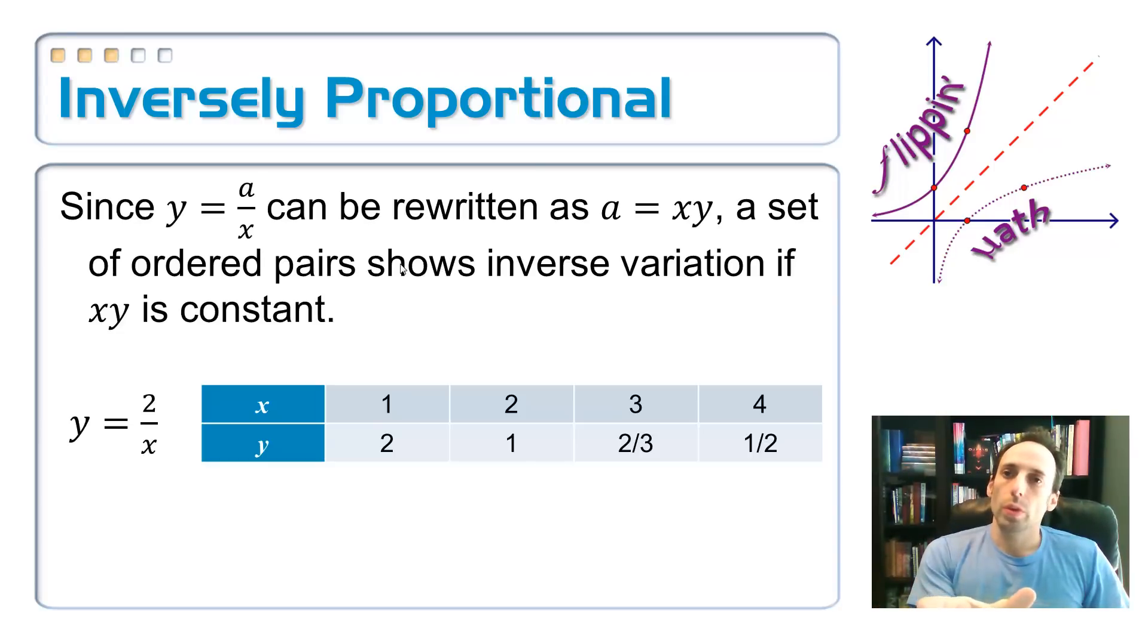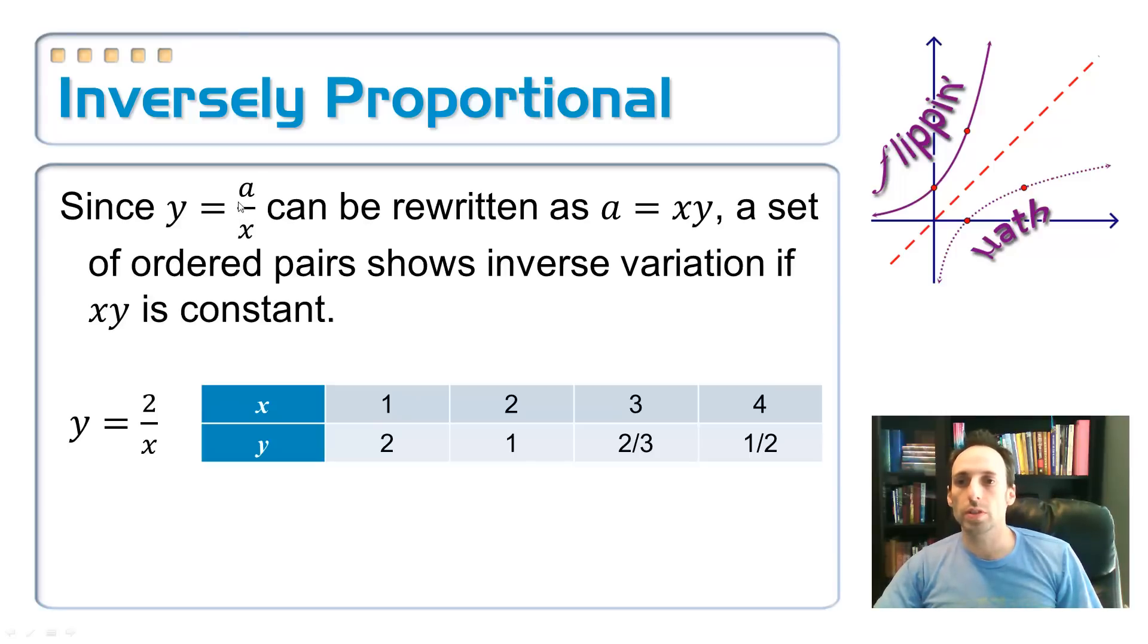Now, if we looked at this before with direct variation. In direct variation, if I divided the y by the x, I got the constant variation. So, if I take this equation, y is equal to a times x, then I can get the constant variation by just getting this x over to the other side. Just multiplying it over, and a is equal to x times y.